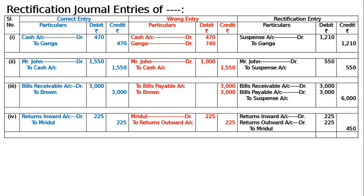Mridul has to come in credit at 225, and the debit to Mridul in the wrong entry should be cancelled by crediting Mridul 225, hence to Mridul it is 450 in total. Sales returns by Mridul wrongly passed through purchase returns account is now rectified. The journals are totaled and the total is 7985 in both the debit and credit columns of the rectification journal.